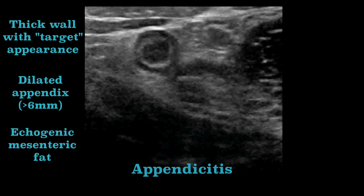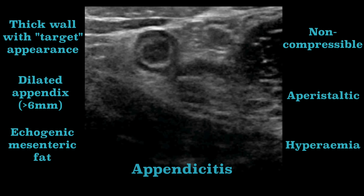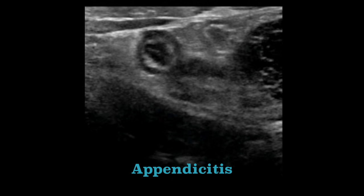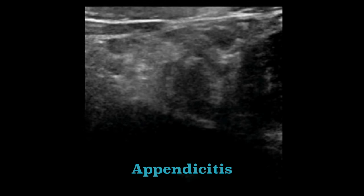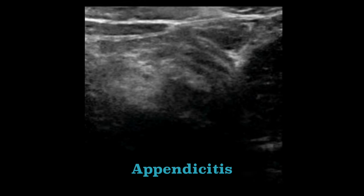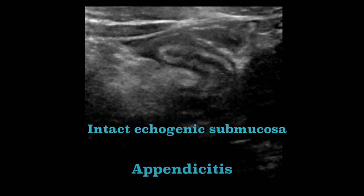But there are even more things to note with ultrasound. As ultrasound is a dynamic test, you can also look for compressibility and for peristalsis. The absence of both of these features further suggests appendicitis. Colour Doppler assessment allows you to look for hyperemia, which is another useful supportive feature. In this example, we can see that the submucosa, although echogenic, is intact.